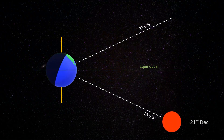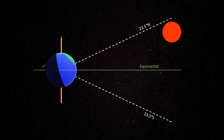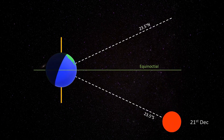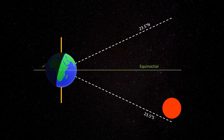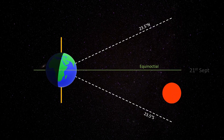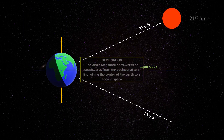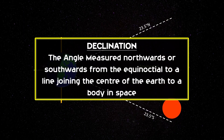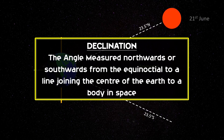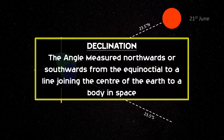From the perspective of an observer on the surface of the earth, the sun appears to be moving between latitude 23.5 degrees north and 23.5 degrees south throughout a year. From this observation, we can define declination. Declination is the angle measured northward or southward from the equinoctial to a line joining the center of the earth to a body in space.